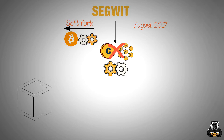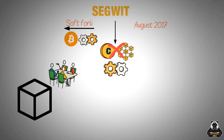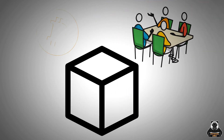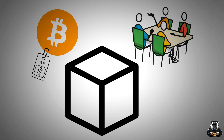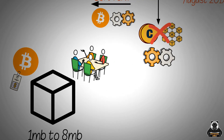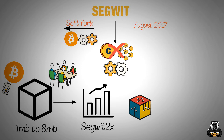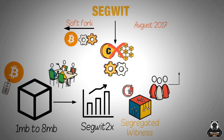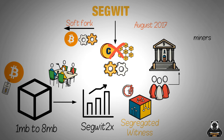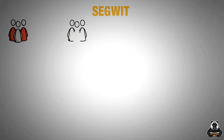This was due to the block size wars, where some people wanted to increase the block size from 1MB to 8MB to scale Bitcoin. The block size wars happened because the Bitcoin network was getting congested and transaction fees were rising. There were two camps: those who wanted to increase the block size — SegWit2x — and those who wanted to keep the block size at 1MB but make the protocol more efficient — Segregated Witness. Those that didn't want to increase the block size felt that it would centralize the power with the miners who could afford to run the larger blocks. So SegWit was a compromise between the two camps.